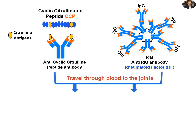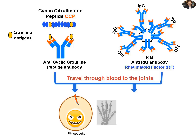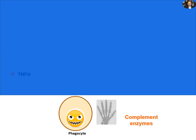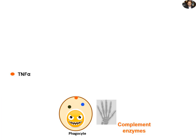Both types of antibodies travel through blood to the joints, and even to other tissues. Remember, rheumatoid arthritis is a joint disease with systemic manifestations. Now focusing on joints, where antibody complex accumulation activates phagocytes and complement systems. The activated phagocytes release inflammatory cytokines such as TNF-alpha, which play an important role in mediating the inflammatory damage to the joints.